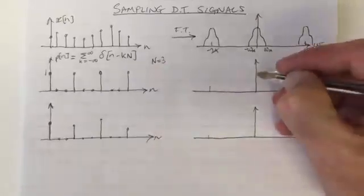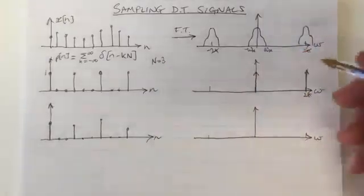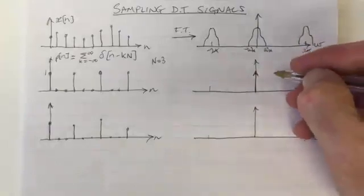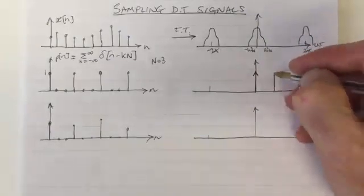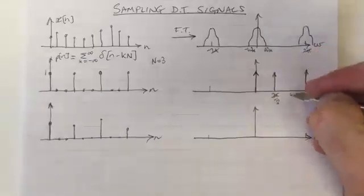So there's a delta function at 0. There's also a delta function at 2π/3, and 4π/3.